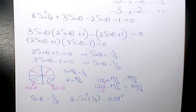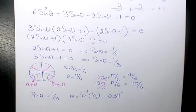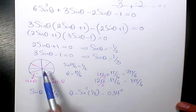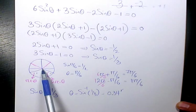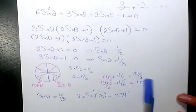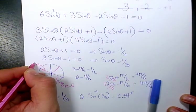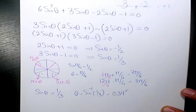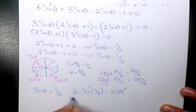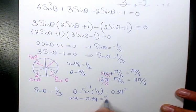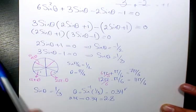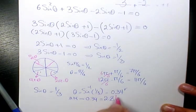0.34 radian is going to be the answer in quadrant 1. I need to find the answer in quadrant 2, which will be pi minus theta. That will be 3.14 which is pi, minus 0.34, which is 2.8. So I found all four answers.